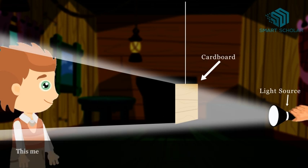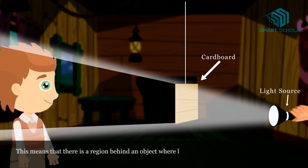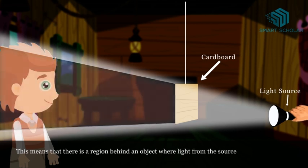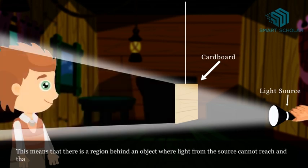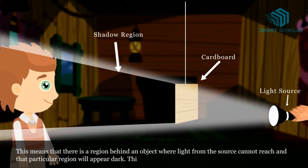This means that there is a region behind an object where light from the source cannot reach and that particular region will appear dark. This dark region is what we call the object's shadow.